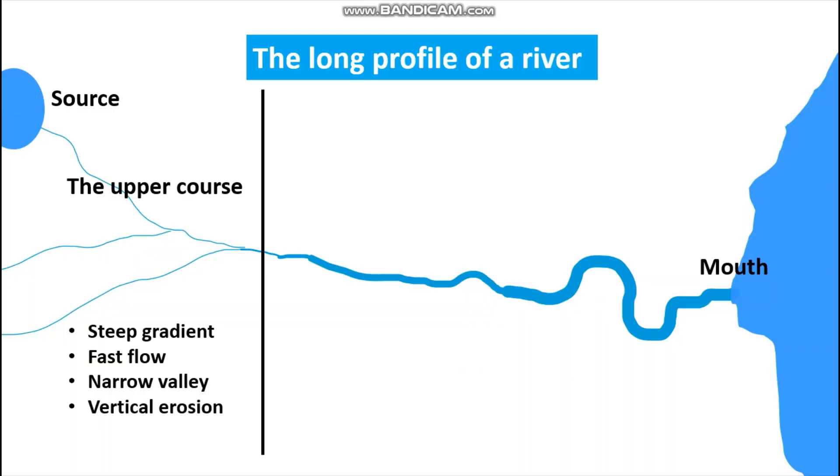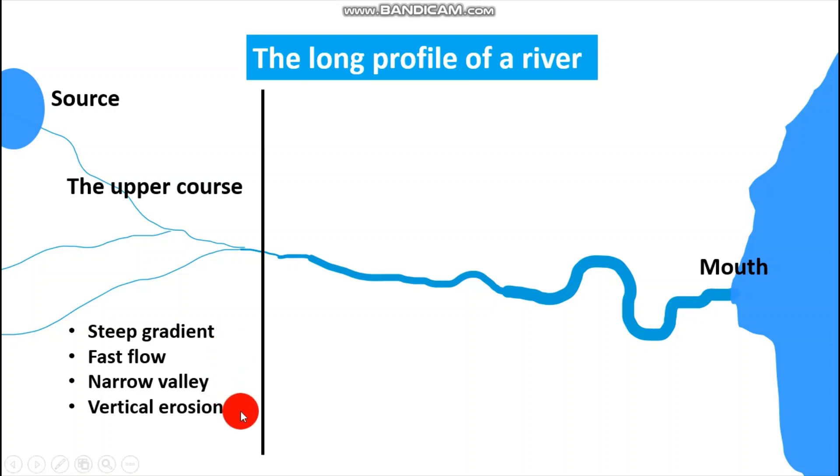Each of these categories has distinct characteristics in terms of how the river behaves. For instance, in the upper course of the river, there is a steep gradient, the river is flowing very fast, the channel is narrow, and we have vertical erosion taking place. At this stage, we have the existence of tributaries and formation of features like interlocking spurs. This is the stage where we have V-shaped valleys, and the river is gaining its materials or load through erosion.